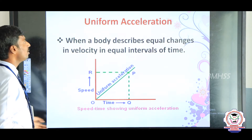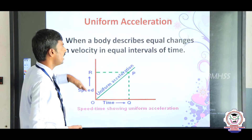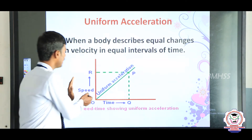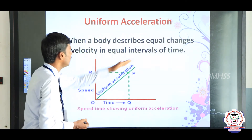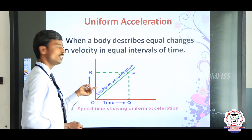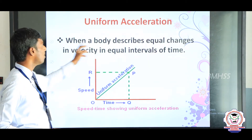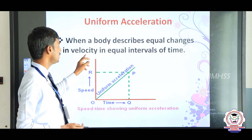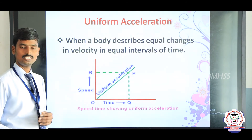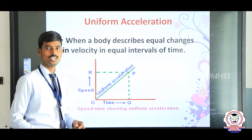Next is uniform acceleration. When a body describes equal changes in velocity in equal intervals of time — for example, 2 seconds: 2 km, 4 seconds: 4 km, 6 seconds: 6 km — this is called uniform acceleration, because the rate of change of velocity (dv/dt) is constant.